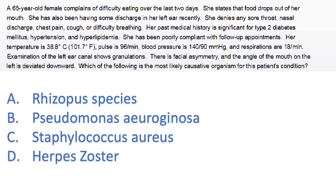The first question — I want you guys to read the last two lines first, like I always do. If you've just taken your ENT rotation, you would already figure out the diagnosis from the last two lines in this particular question. Examination: the left ear canal shows granulations. There is facial asymmetry and the angle of the mouth on the left is deviated downward — essentially, this person has facial nerve paralysis.